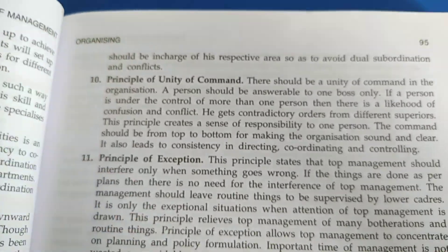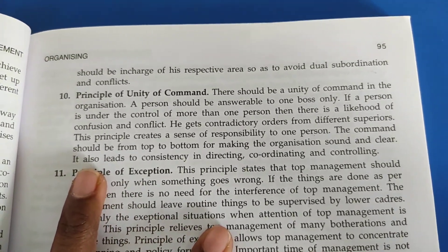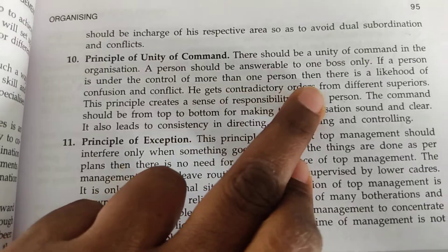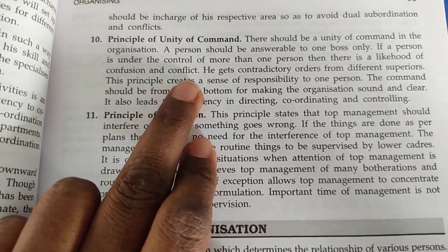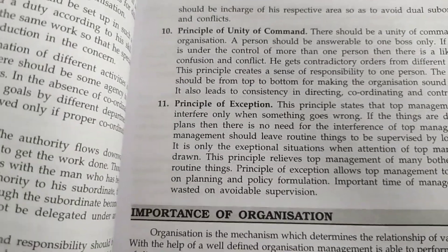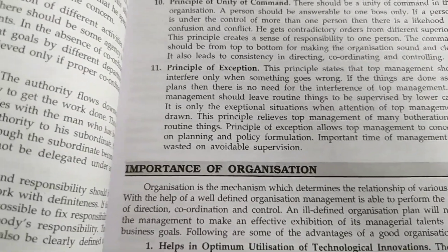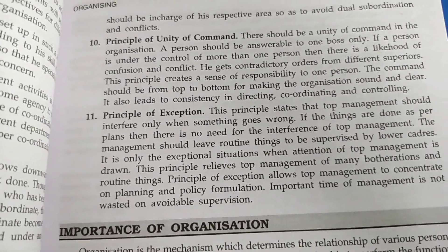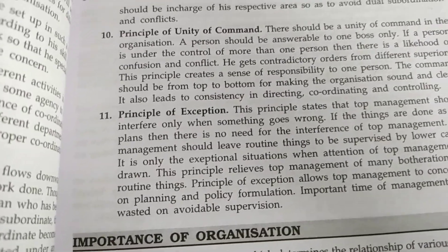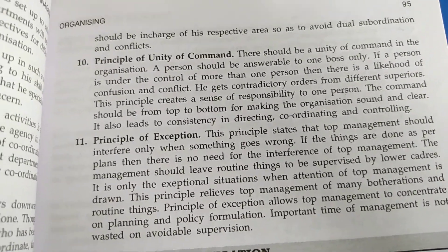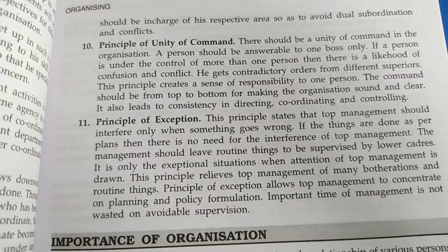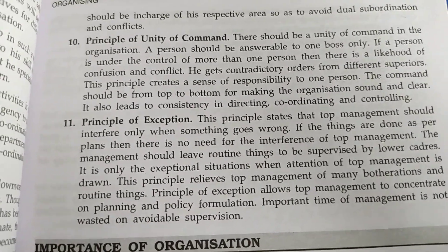Next is the principle of unity of command. There should be unity of command in the organization — a person should be answerable to one boss only. If a person is under the control of more than one person, there is a likelihood of confusion and conflict. There should be only one boss whose command the workers follow. If many bosses are there, the subordinates will be confused about whose words to listen to and whose work to complete.